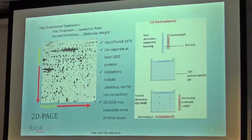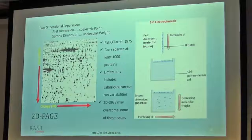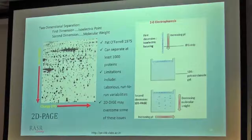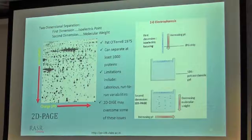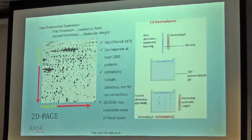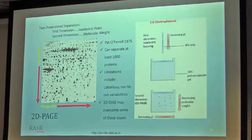2D-PAGE, which is two-dimensional polyacrylamide gel electrophoresis, is basically an advancement of traditional one-dimensional SDS polyacrylamide gel. Proteins are separated first according to their charge from acidic to the basic range. Once their isoelectric point comes, the protein becomes stable over there. Once the proteins are separated according to their charge, you can place that separated protein on top of a one-dimensional gel and separate according to molecular weight.